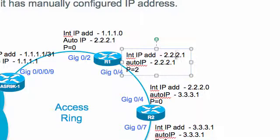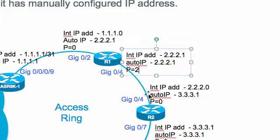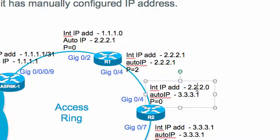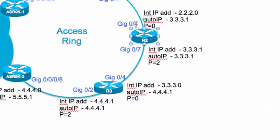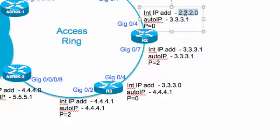To become an owner, R1 picks the working IP address from the auto IP address configured on that interface. Once the working IP address is assigned from the auto IP address command, the priority changes to 2, making gig0/4 on R1 the owner on that segment. It then assigns IP address 2.2.0 to its neighbor R2. R2's gig0/4 becomes a non-owner receiving 2.2.0, and the process carries on to other nodes in the ring until it reaches the edge.